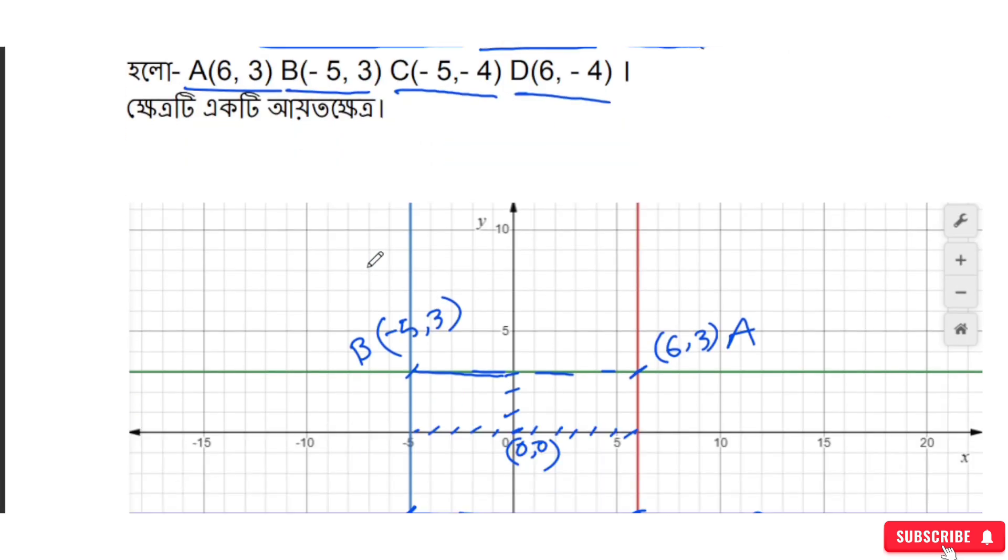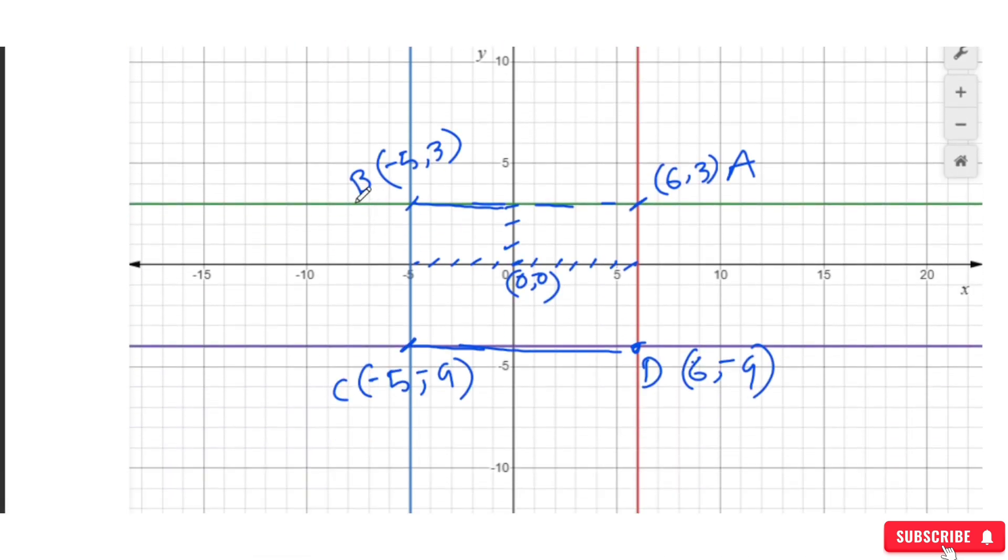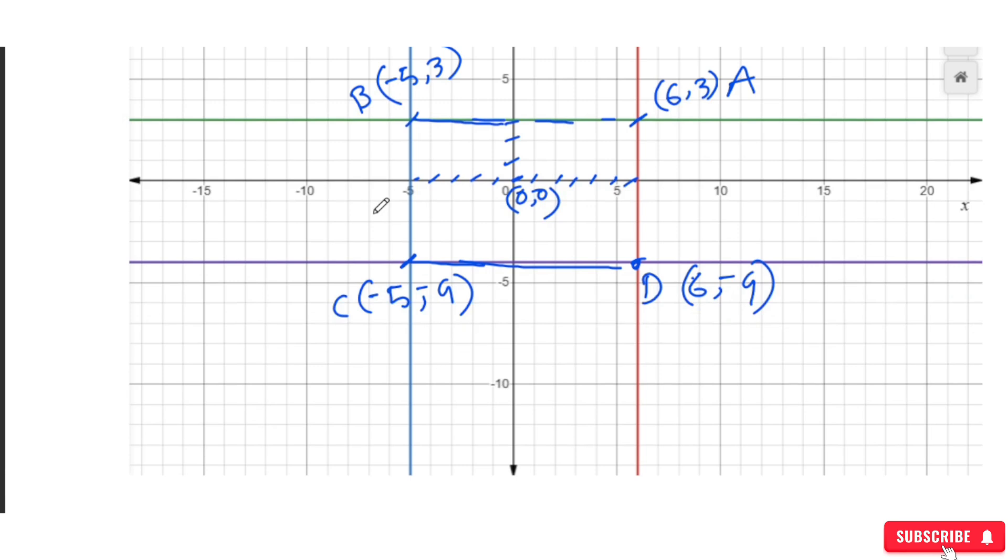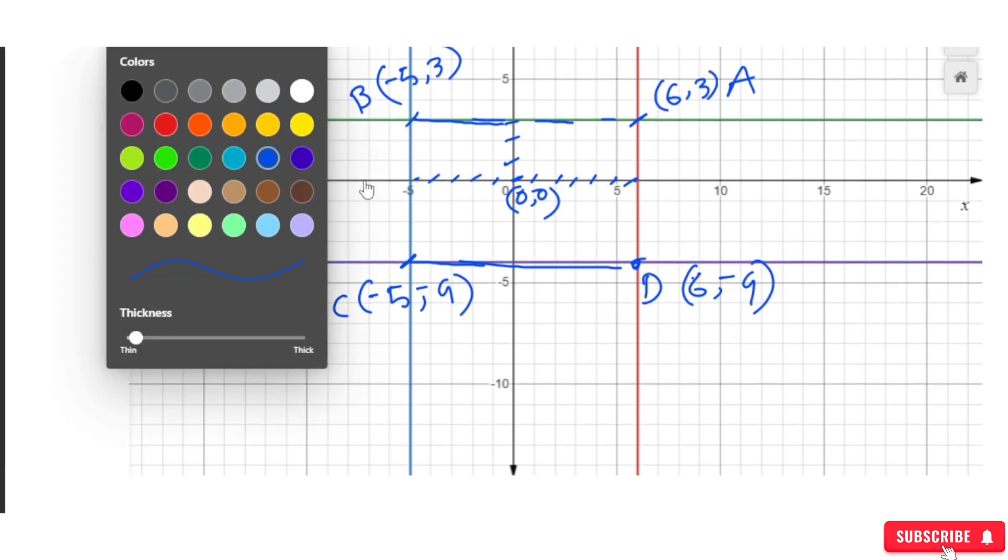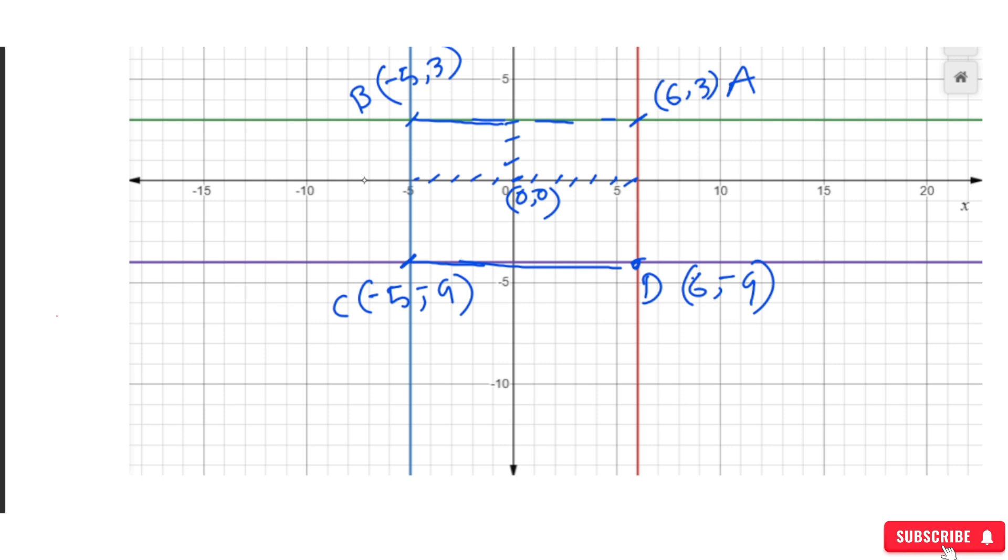Let's label these points. We'll call them A, B, C, and D. Point A at 6 comma 3, point B at minus 5 comma 3, point C at minus 5 comma minus 4, and point D at 6 comma minus 4.